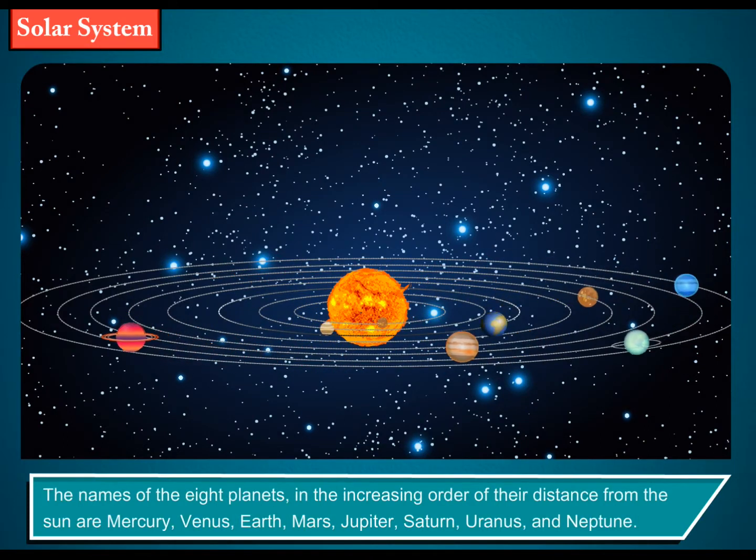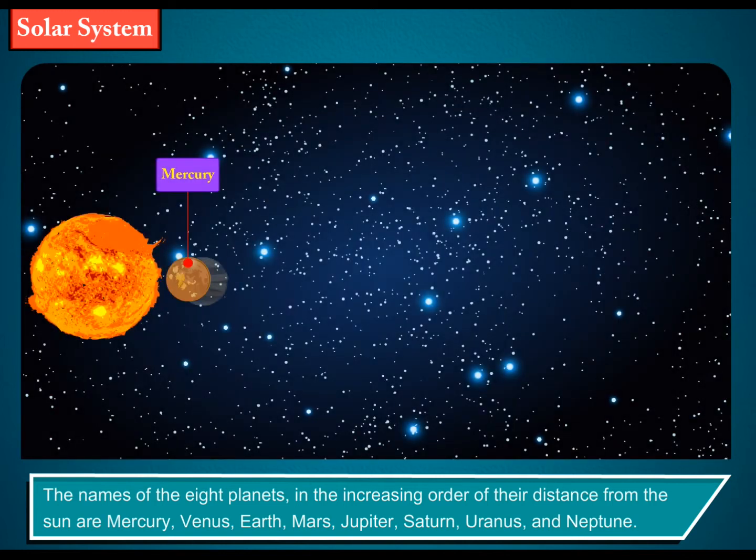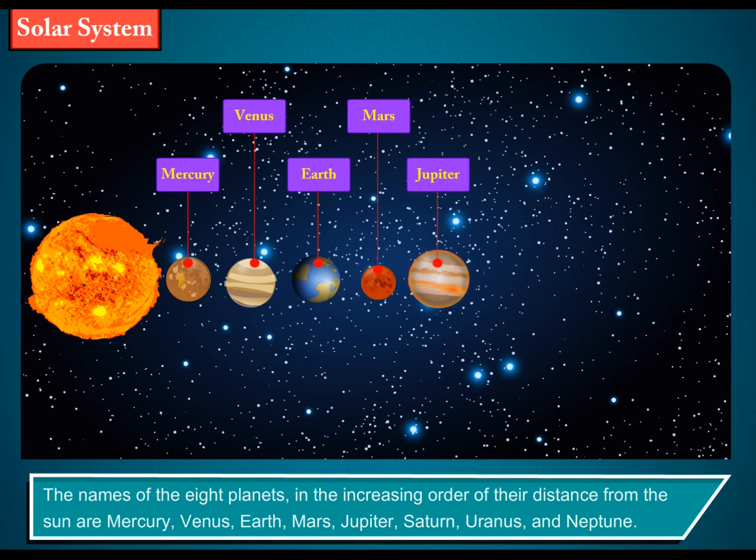The names of the eight planets in increasing order of their distance from the Sun are Mercury, Venus, Earth, Mars, Jupiter, Saturn, Uranus, and Neptune.